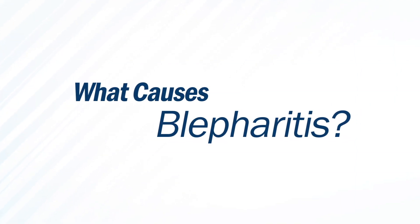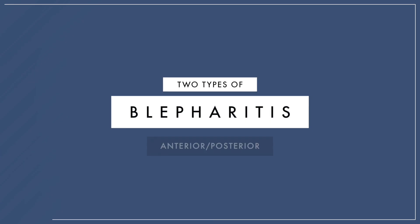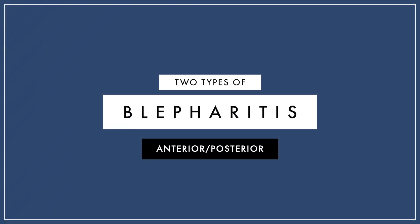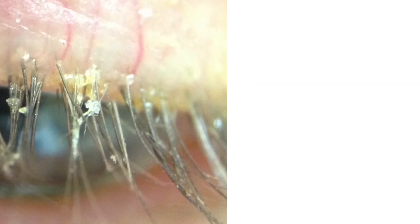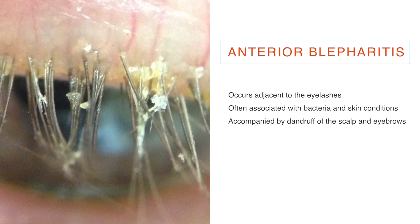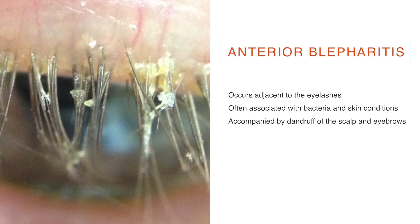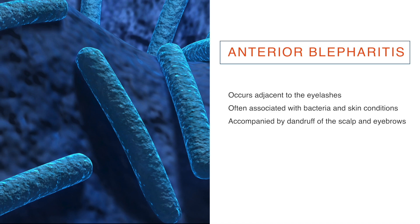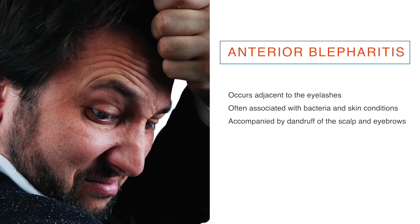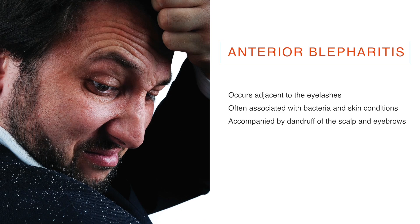What causes blepharitis? There are two types of blepharitis. The first type is anterior blepharitis, which occurs adjacent to the eyelashes. Anterior blepharitis is often associated with bacteria and skin conditions, and is frequently accompanied by dandruff of the scalp and eyebrows.